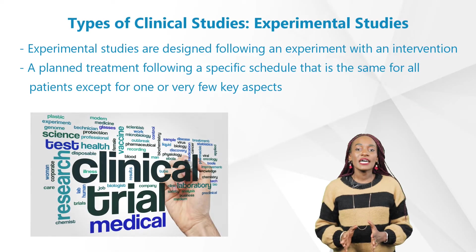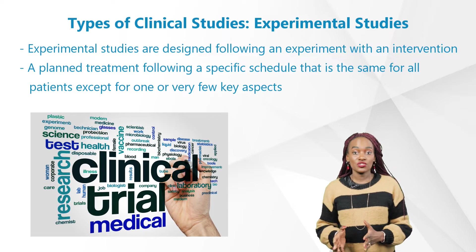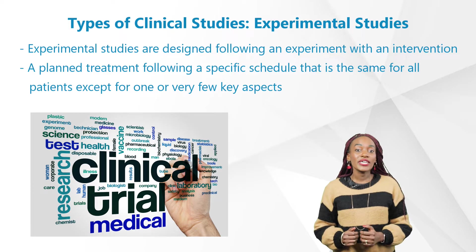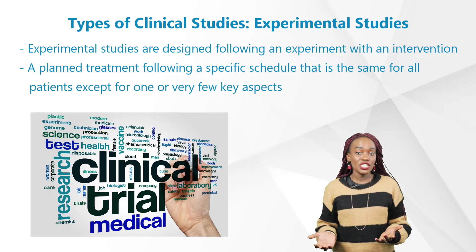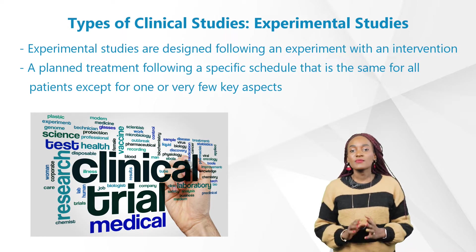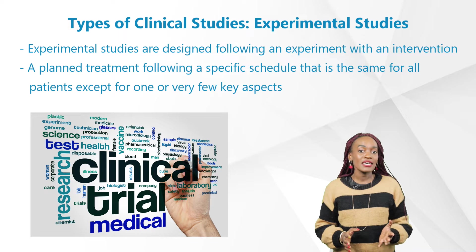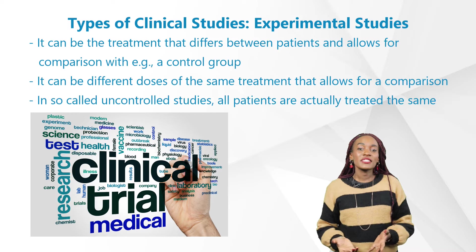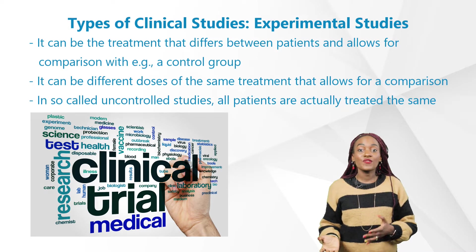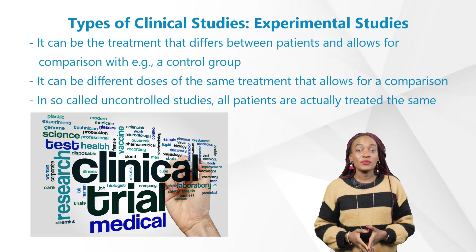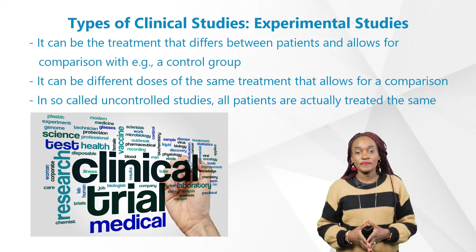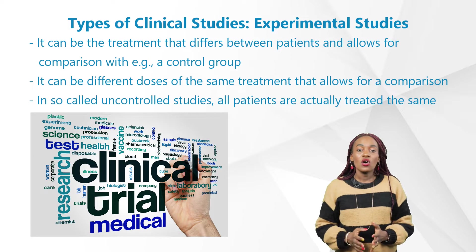Last time we talked about the first type of clinical study: observational studies. The second type are experimental studies, which are designed following an experiment with an intervention — that means a planned treatment following a specific schedule that's the same for all patients except for one or very few key aspects. Sometimes it can be the treatment that differs between patients, allowing for comparison — for example, a control group — and sometimes it can be different doses of the same treatment. In so-called uncontrolled studies, all patients are actually treated the same.